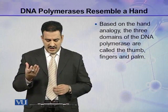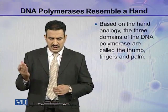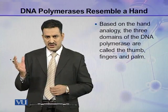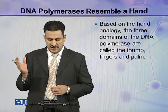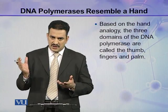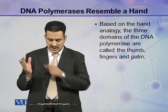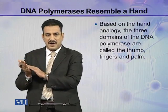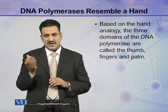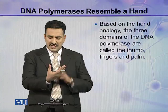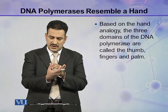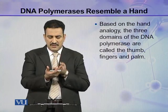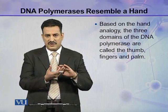Based on this hand analogy, three domains are present in the DNA polymerase. These three domains are: thumb, fingers, and palm. In a DNA polymerase enzyme, these three domains are present — one is thumb, the other domain is palm, and the third domain is finger.